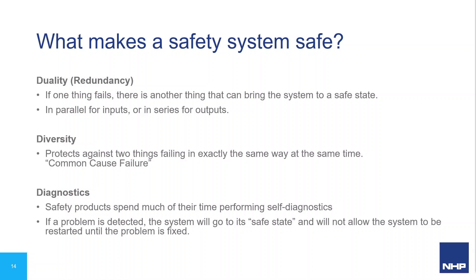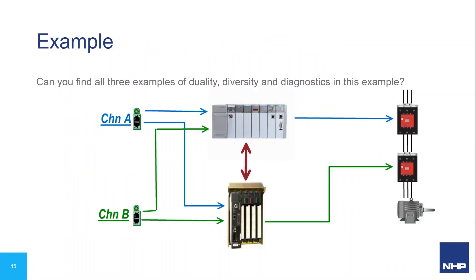And diagnostics: if a fault eventually occurs, we should be able to detect it, bring the machine to a safe state, and prevent restart until the fault is corrected. Here we have an example of a safety control system using standard components — two sensors monitoring a single guard, each fed into a logic controller (an SLC at the top and a PLC5 at the bottom), and two contactors controlling power to a motor. This example shows at least one instance each of duality, diversity, and diagnostics.